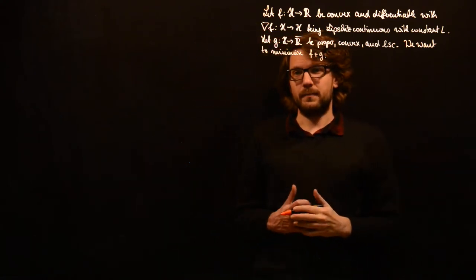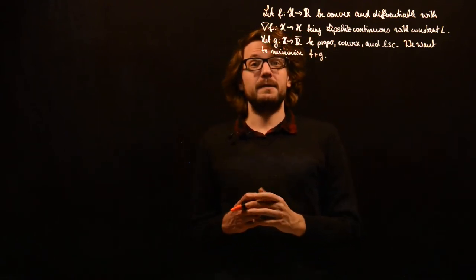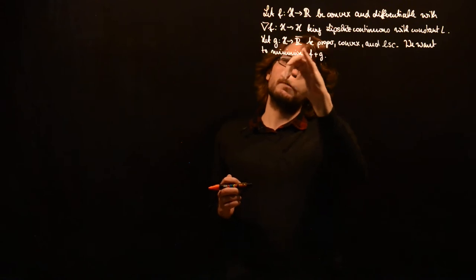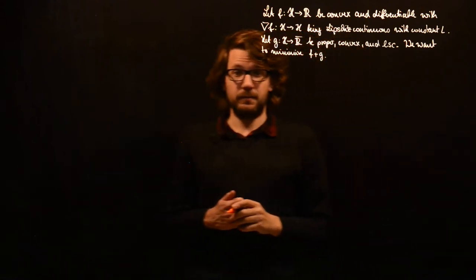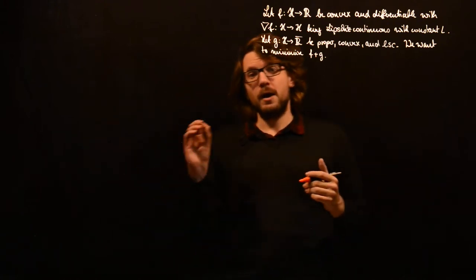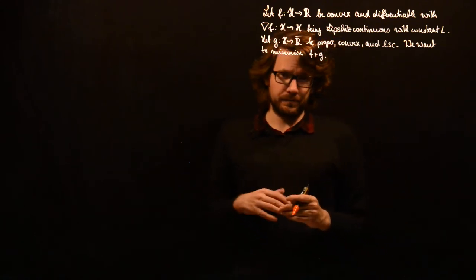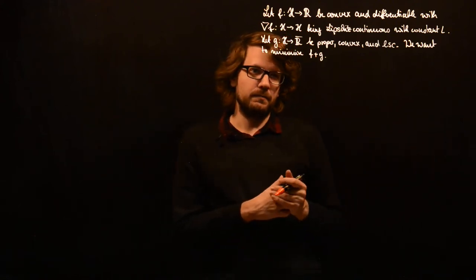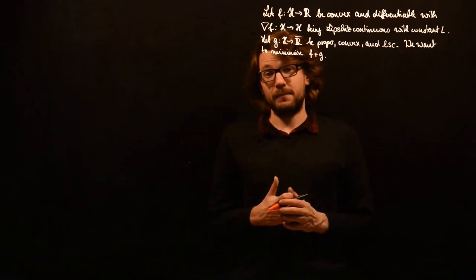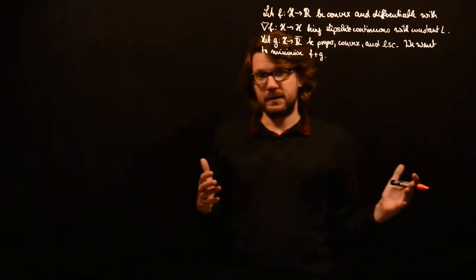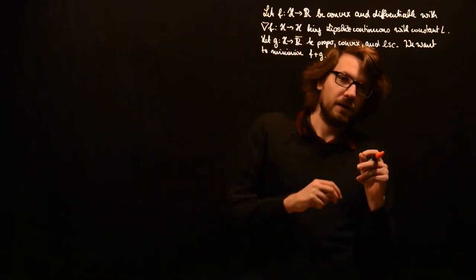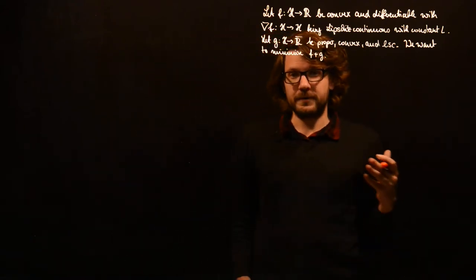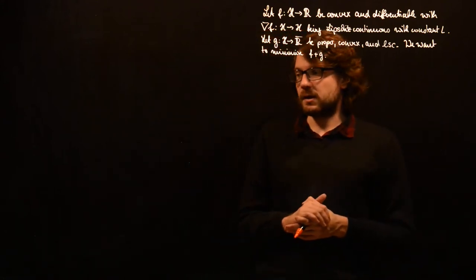One possibility, as we saw, was the subgradient method, which would in each step take a gradient evaluation of f and a subgradient evaluation of g. The problem is that the subdifferential is not necessarily non-empty, so there might be a problem when you don't find a subgradient at a certain point — for example, when you're outside of the domain of g. The more natural way would be to take proximal points of g, which always exist, are unique, and the proximal point operator is Lipschitz continuous with constant one.